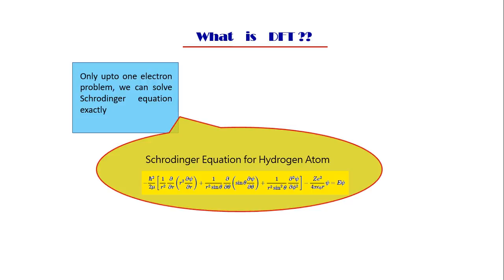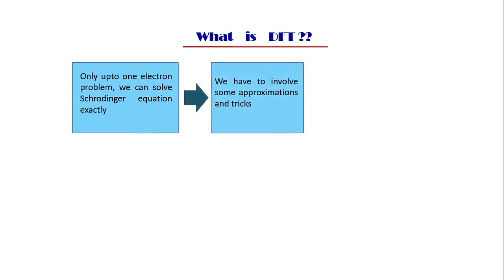And if you think that I will write Schrödinger equation for each electron, proton, and neutron and then I will solve, even for the fastest computer in the world it will take nearly seven years. So we have to involve some approximation and tricks.